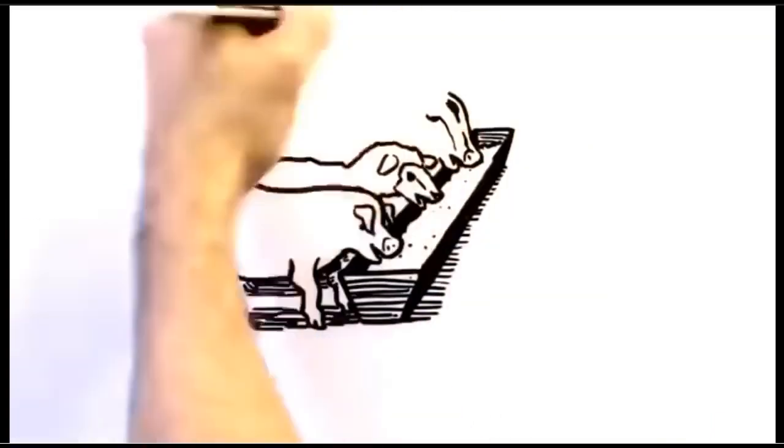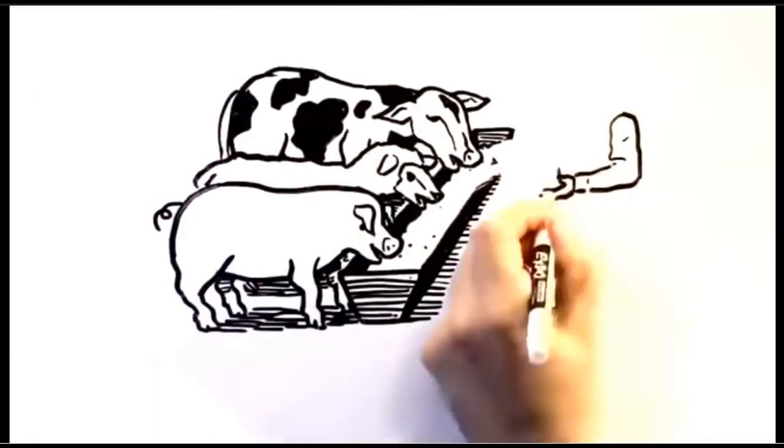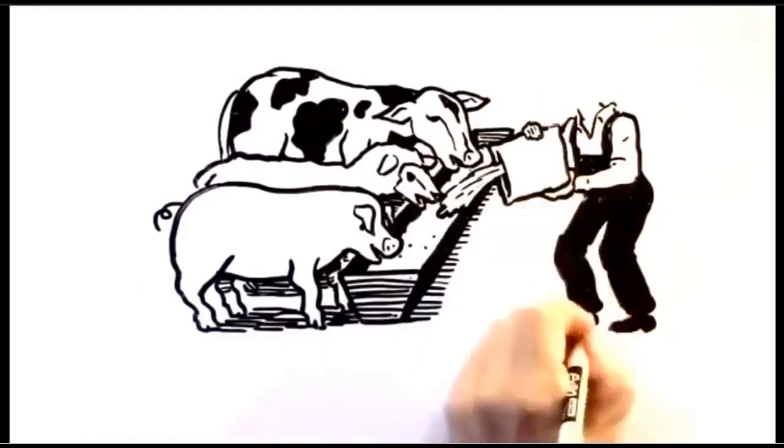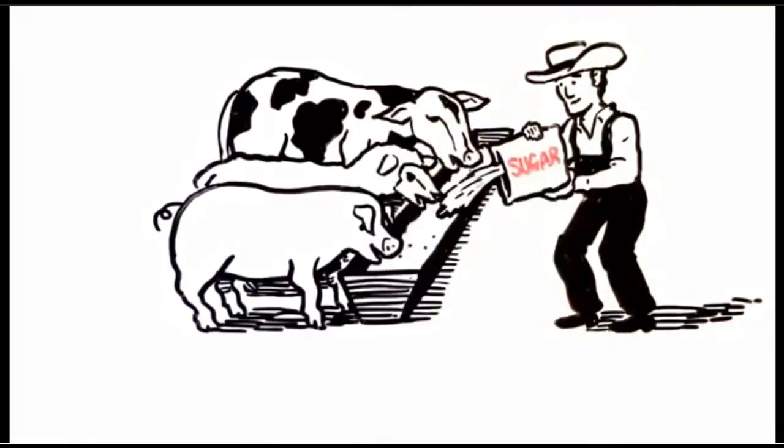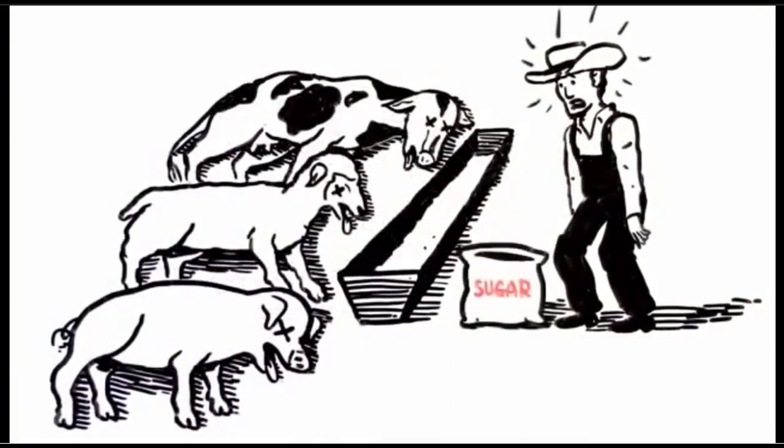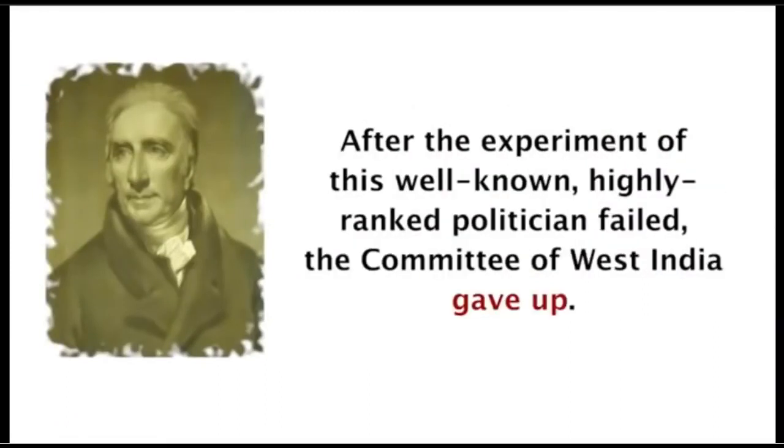Food for animals has always been expensive. Sugar was extremely cheap, so many farmers took on the challenge, hoping for good results. The 25 guineas would be just a bonus to the new, cheaper food supply. But as you may have guessed, the attempts were a disaster. Many resulted in the death of livestock. One member of Parliament, John Kirwan, took on the challenge himself, trying to feed sugar and molasses to his calves. After the experiment of this well-known, highly-ranked politician failed, the Committee of West India gave up.